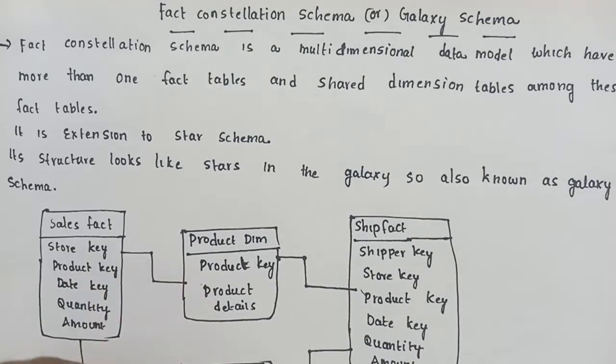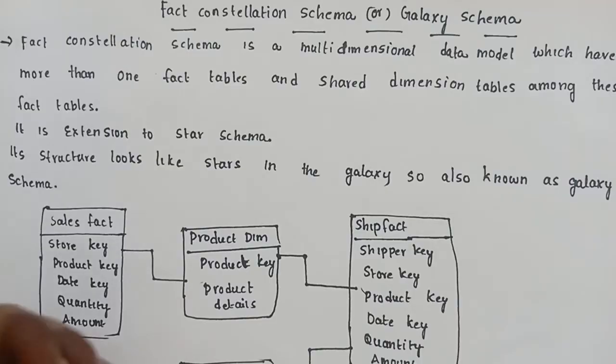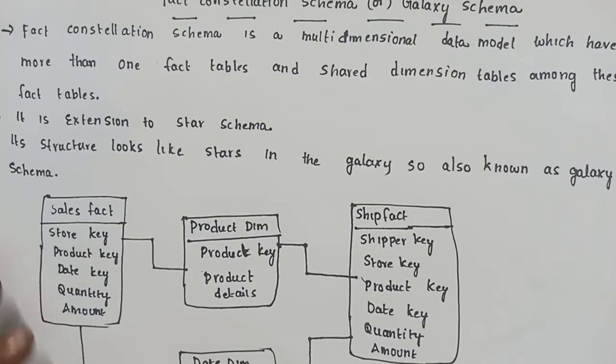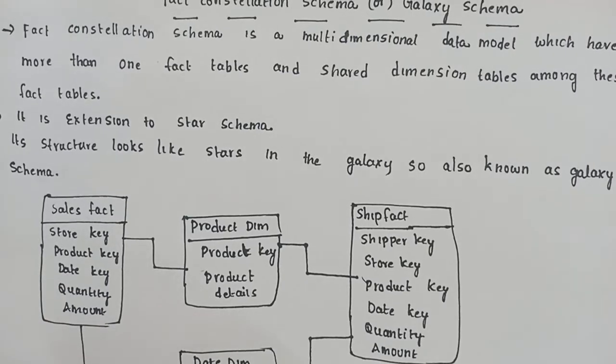This relates to the previous star and snowflake schemas. The difference with fact constellation schema is in the fact tables.